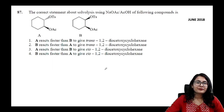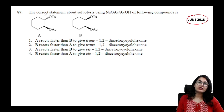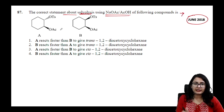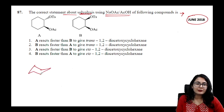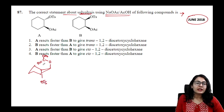A June 2018 CSIR NET question asks about acetolysis using sodium acetate and acetic acid of a cyclohexane compound. The acetoxy group is above in the diaxial form, so NGP by the acetate is clearly possible, and A is going to react faster than B.